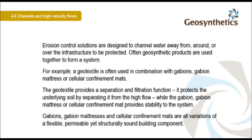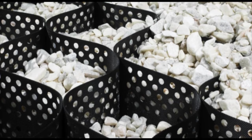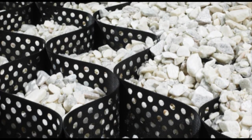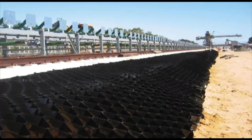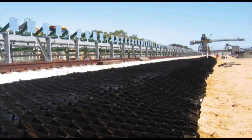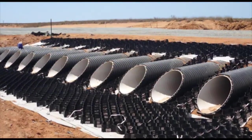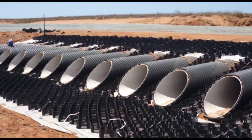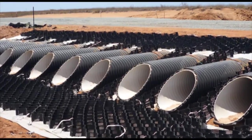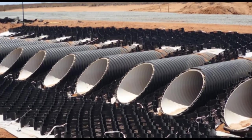Gabions, gabion mattresses, and cellular confinement mats are all variations of a flexible, permeable yet structurally sound building component. A geocell is a honeycombed structure which helps restrain aggregate from moving under water flow. Geocells can be used to prevent erosion along the edges of road formations. A geocell typically has a geotextile beneath; in this instance, the geocell will be infilled with rock to prevent scour around the drainage pipes.